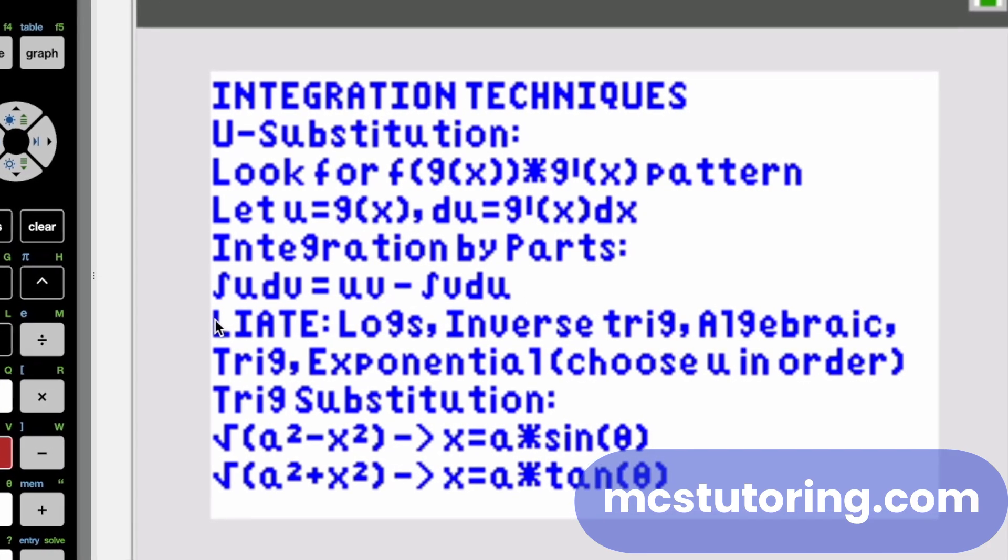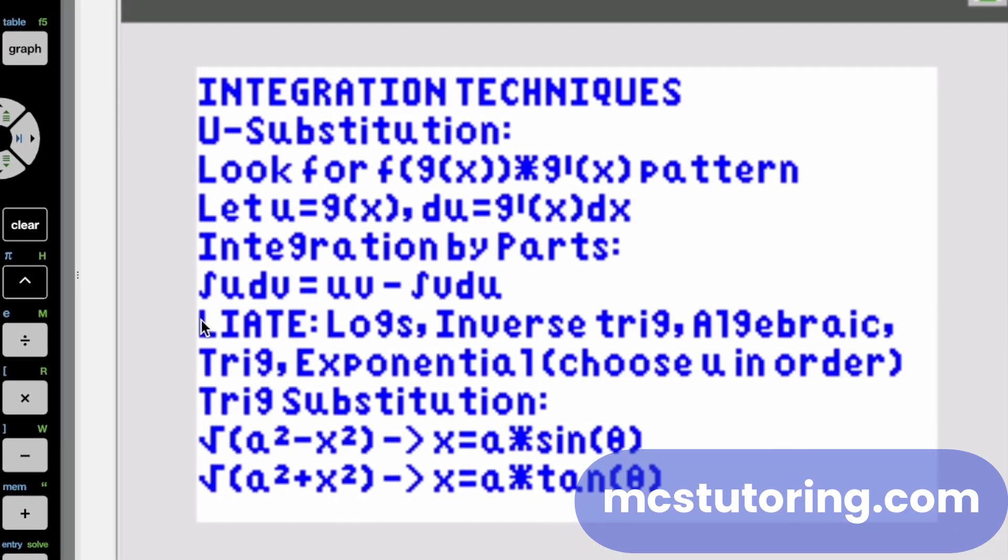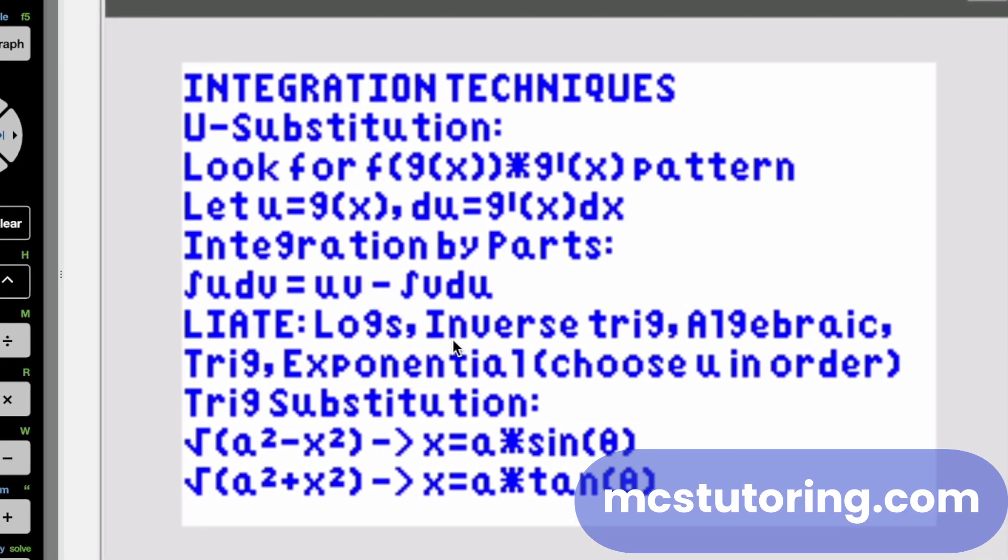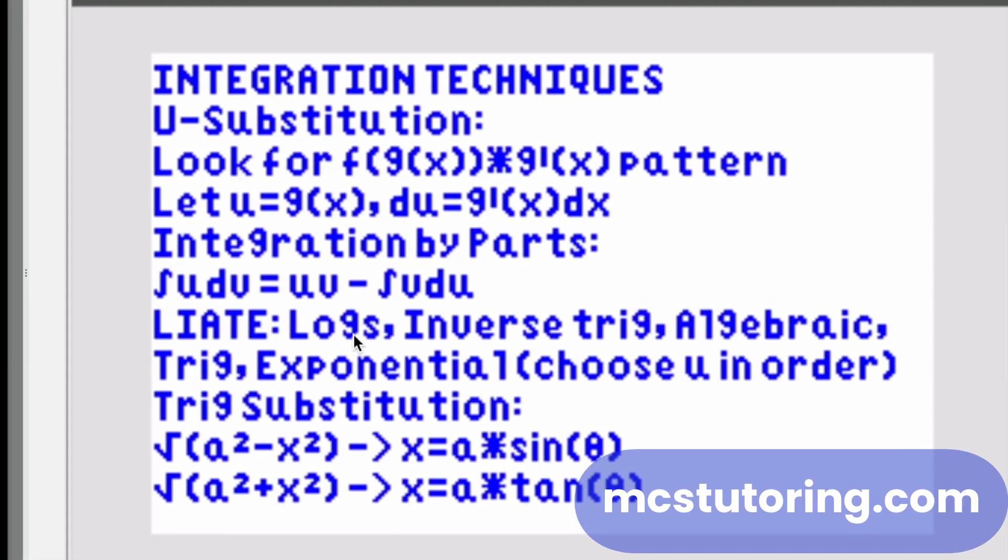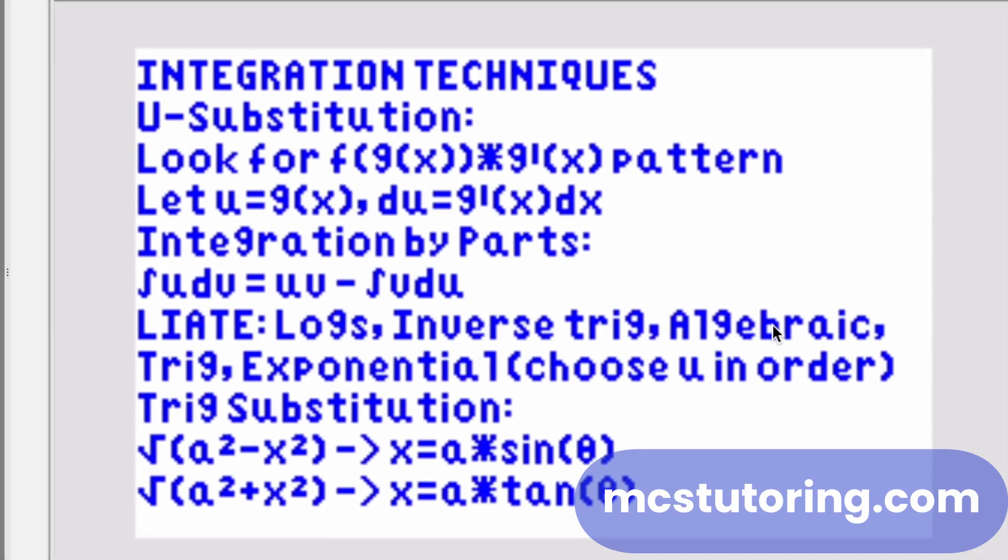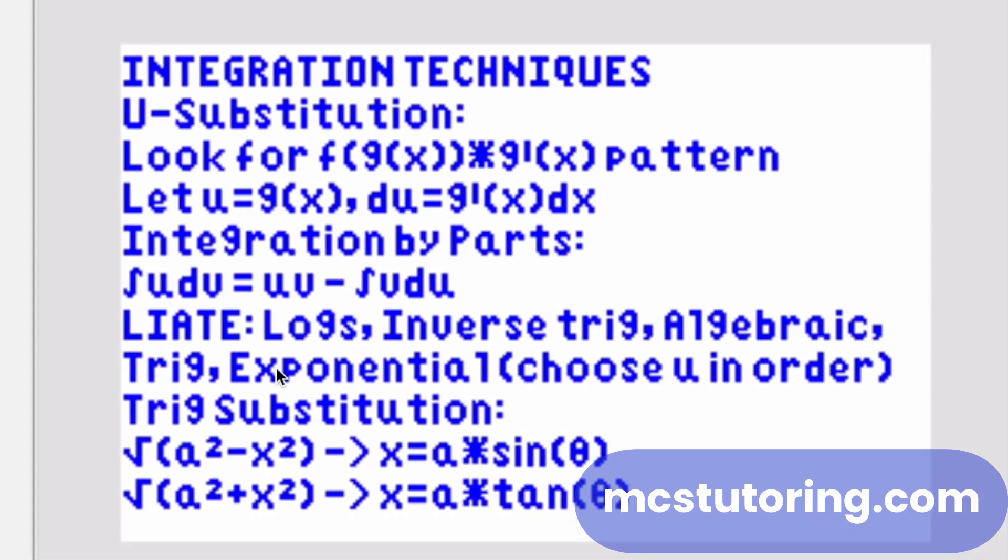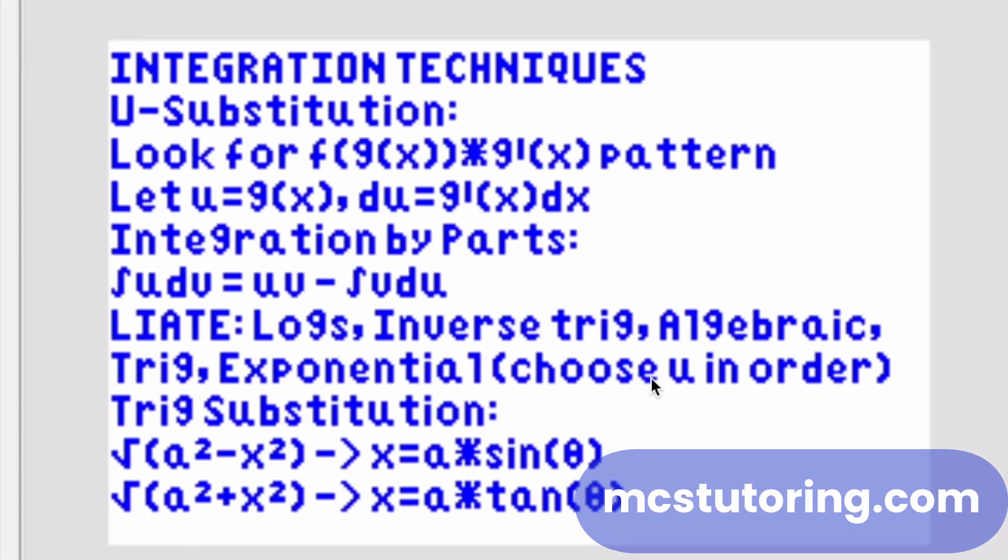Integral of U D V is U V minus integral V D U. Now look, I do not remember this, but I've learned it since then. The Liate method. When you do this U substitution, you'd want to go logs first, inverse trig, algebraic expressions, trig expressions, and exponential and choose U in that order.